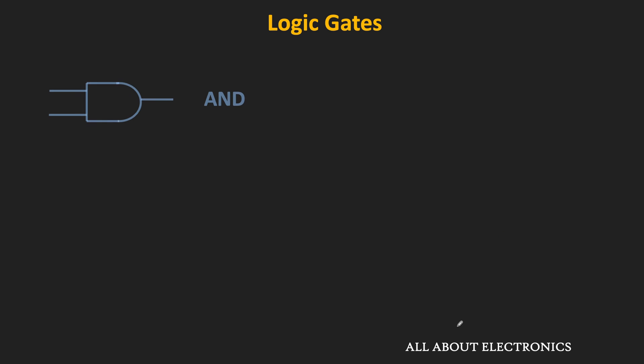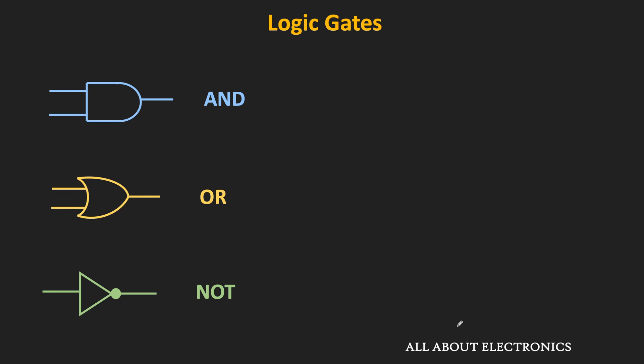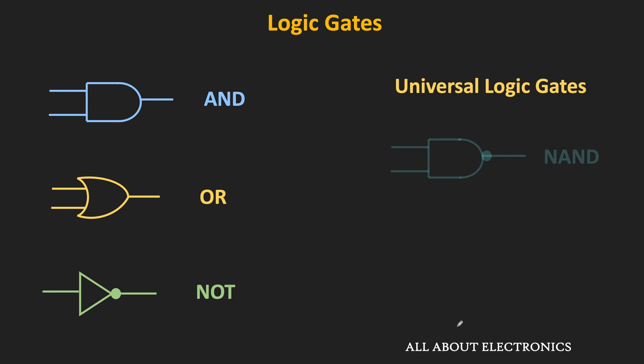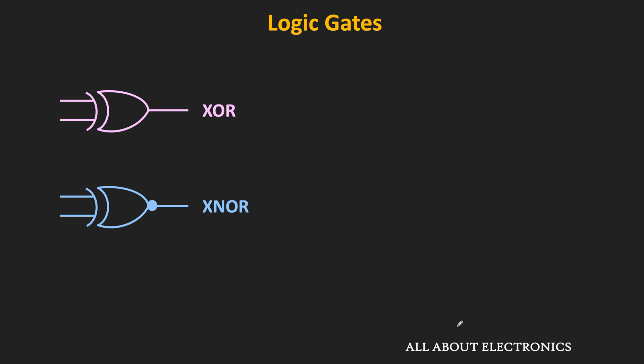The AND gate, OR gate, and NOT gate are very basic types of logic gates, and using these three gates it is possible to build any Boolean function. Apart from that, there are two universal gates — the NAND and NOR — because using any one of these two gates alone, it is possible to build any logic circuit or Boolean function. Additionally, there are two more gates: the XOR gate and the XNOR gate. So one by one, let us learn about all these different logic gates.